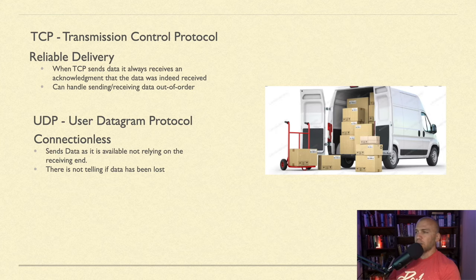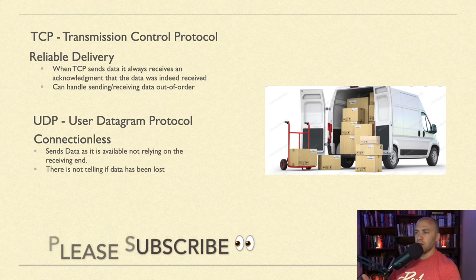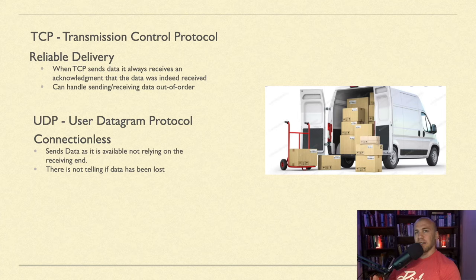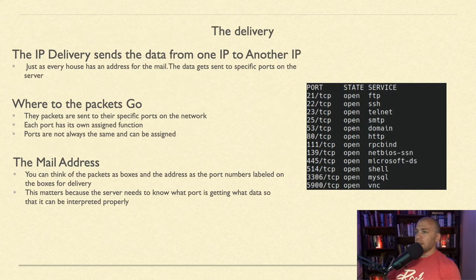TCP is viewed as reliable delivery. When TCP sends data, it always receives an acknowledgement that the data was received. If some packets get lost, the sender will know. TCP can also handle data arriving out of order and reorganize it. UDP is connectionless — it sends data as it's available, not relying on the receiving end. If there's lost data, that data is simply lost.